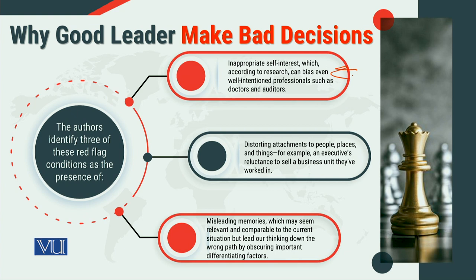The second red flag condition is distorting attachments — attachments to people, places, and things. From these, we can develop associations and an escalation of commitment. For example, an executive's reluctance to sell a business unit they have worked in, because of a special association — a feeling that this association must not fail. The third factor is misleading memories, which may seem relevant and comparable to the current situation but lead our thinking down the wrong path by obscuring important differentiating factors.